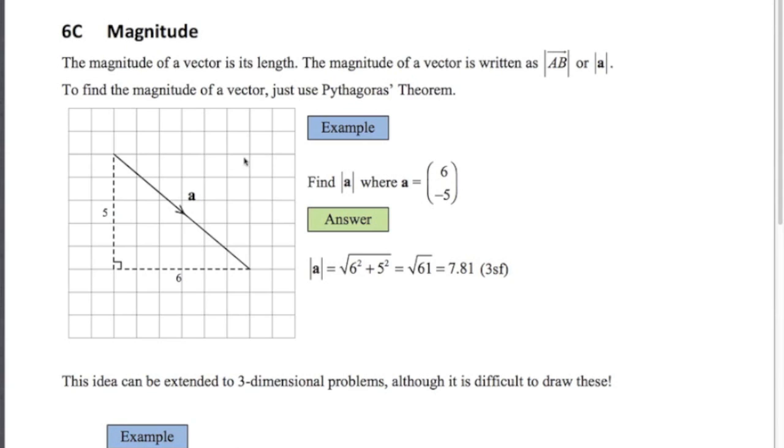So this vector a is 6 minus 5. Remember the top number is telling us how far to go left or right. The bottom number is how far to go up or down. So positive 6 means 6 to the right, minus 5 means 5 down.